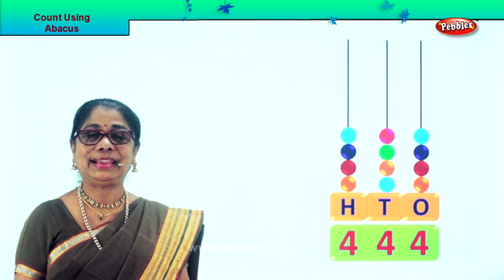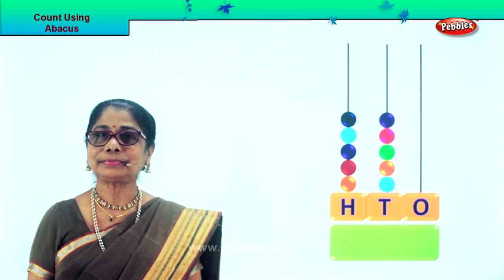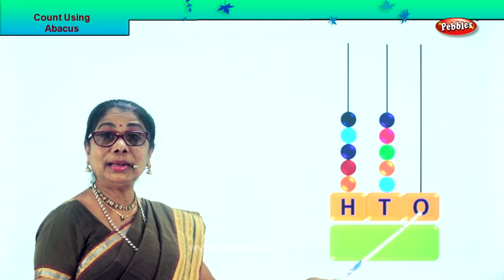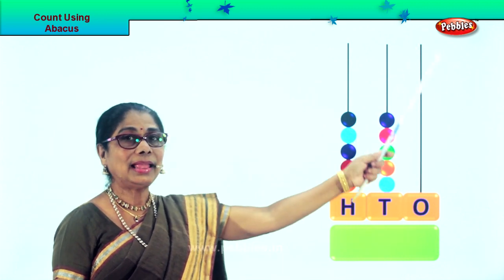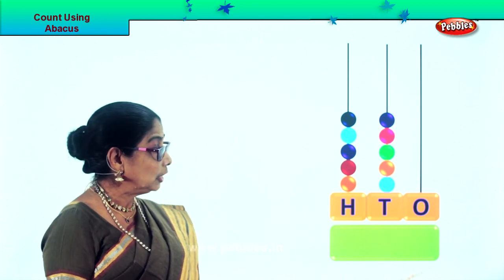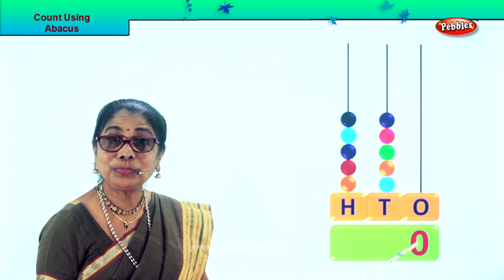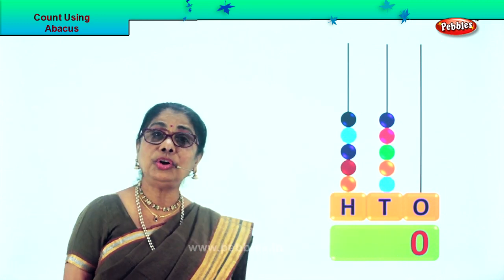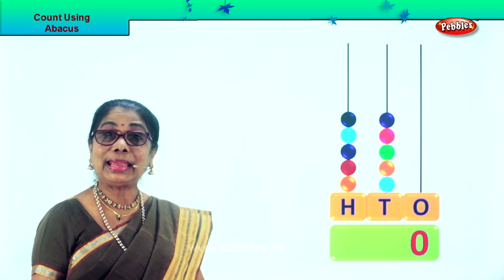Shall we take another sum? In the 1s place we have no beats. In the 1s place we do not have a single beat, so we put down 0 in the 1s place. There are no beats on the rod on the abacus — we put down 0 in the 1s place.